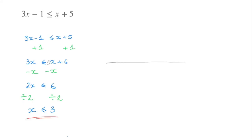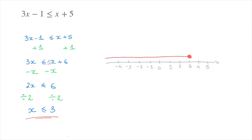If needed, we can represent this answer on the number line. With 0, 1, 2 marked and so on, to illustrate x less than or equal to 3, I place a dot above the 3 and fill it in. Starting from that dot I draw an arrow pointing towards all the values of x less than 3. Notice the dot above the 3 is filled in — that's to highlight the fact that x can be equal to 3. And that's our first example done.